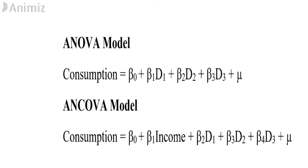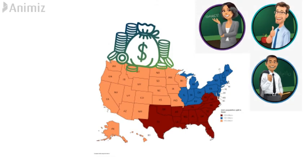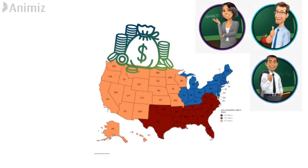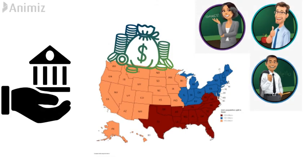ANCOVA models are an extension of the ANOVA models in that they include both quantitative and qualitative or dummy regressors. Let us reconsider the previous example. We are now including a quantitative variable, government expenditure on public schools.